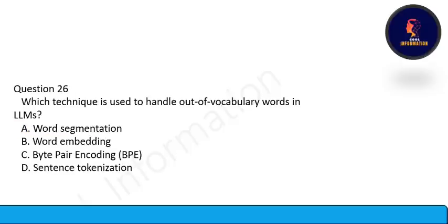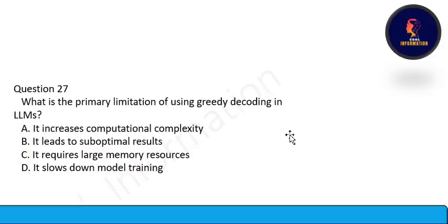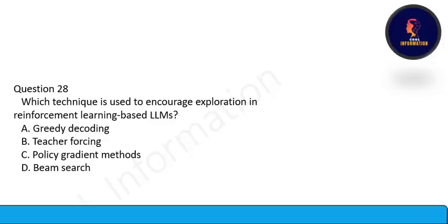Next question: Which technique is used to handle out-of-vocabulary words in LLMs — word segmentation, word embedding, byte pair encoding, or sentence tokenization? Option C is correct: byte pair encoding. Next: What is the primary limitation of using greedy decoding in LLMs? It leads to sub-optimal results. Option B is correct. Which technique is used to encourage exploration in reinforcement learning-based LLMs? Policy gradient method. Option C is correct.